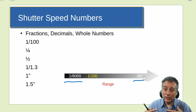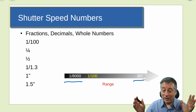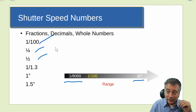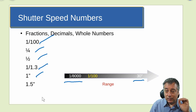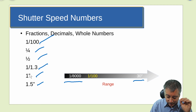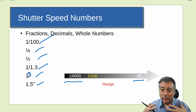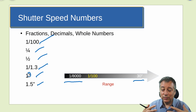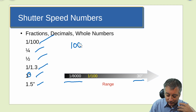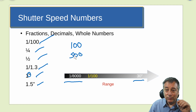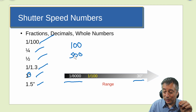Shutter speed numbers can be confusing because you're dealing with fractions, decimals, and whole numbers in the same camera. Typically you're at 1/100 or 1/4 or 1/2, but as you get closer to one second you might be at 1/1.3. Most cameras put a little double-quote next to the number when you're at one second or higher. Also, many cameras don't show fractions — they might show just '100' when you're at 1/100, or '500' for 1/500. That's a huge difference to be aware of.